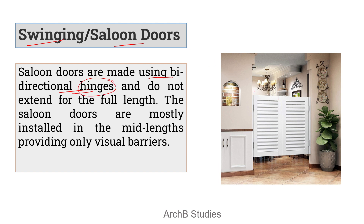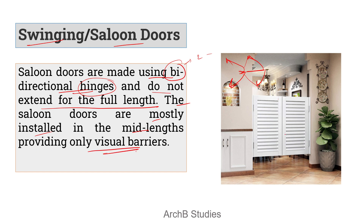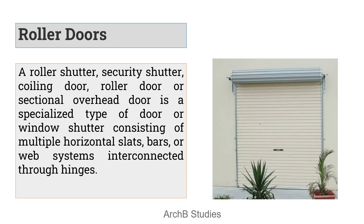Next is swinging or saloon doors. Saloon doors use bi-directional hinges, meaning the hinge allows the panels to swing both ways. However, these panels do not extend the full length — they are installed at mid-length, providing only a visual barrier. The purpose is that someone on one side cannot see what is happening on the other side.